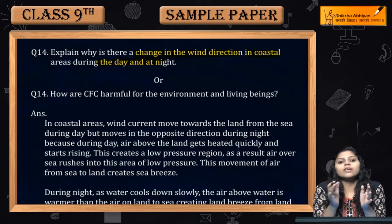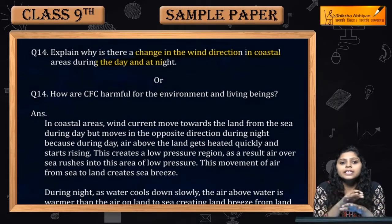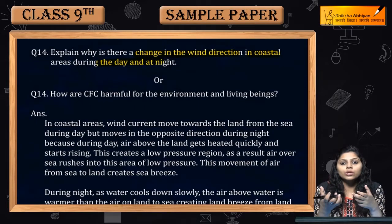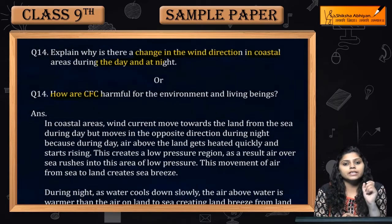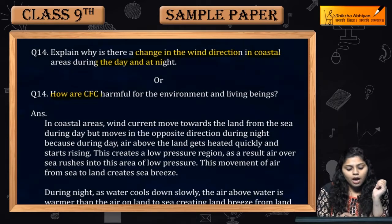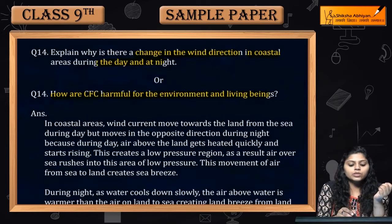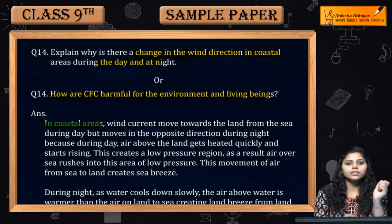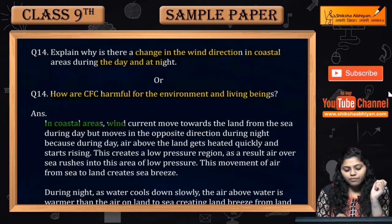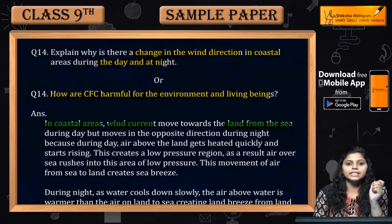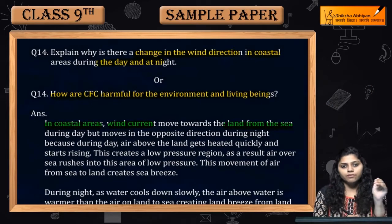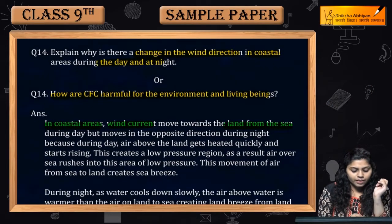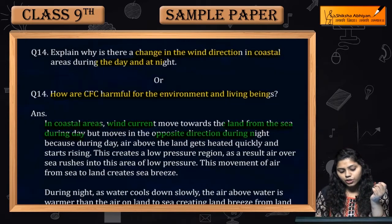In coastal areas — the sea and land areas — wind current moves towards the land from the sea. Wind travels from land to sea during daytime, but moves in the opposite direction during night.